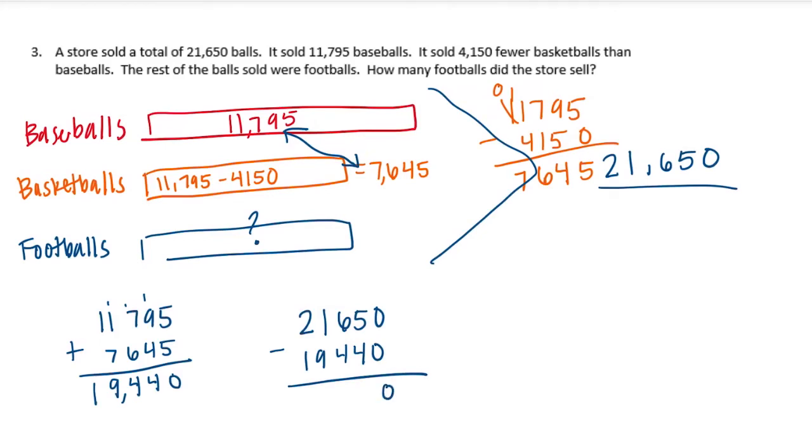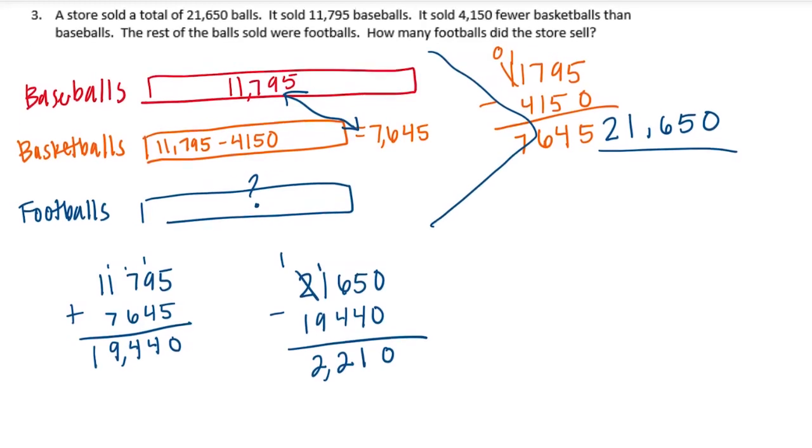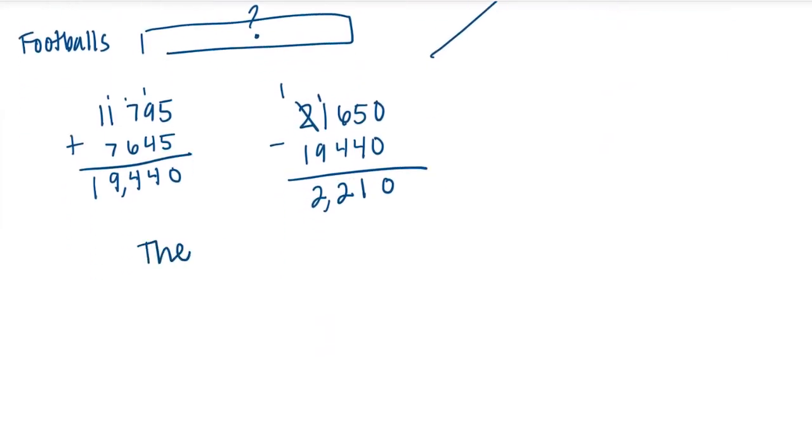Now we just need to subtract that from the total 21,650 to figure out how many footballs. 0 minus 0 is 0. 5 minus 4 is 1. 6 minus 4 is 2. 1 minus 9, we need to borrow. 11 minus 9 is 2. 1 minus 1 is nothing. So we get 2,210. We would say that the store sold 2,210 footballs.